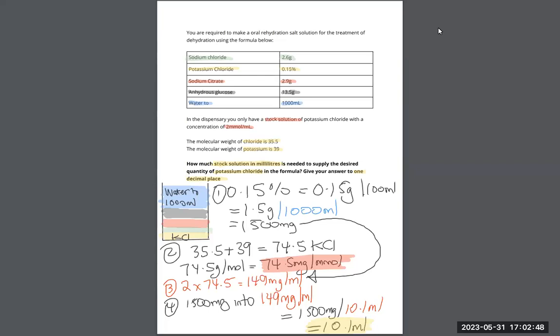Now from the question, we need to calculate potassium chloride. Therefore we need to use potassium chloride only. So you must use this part here, you have to use this section, otherwise you'll get the question wrong. We need to use that, and we need to use the two millimoles, so 0.15%.